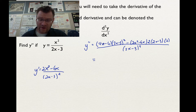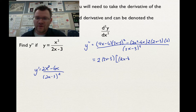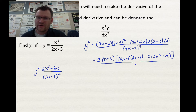Now I can take out a greatest common factor. I've got (2x minus 3) terms, so I'm going to take out one (2x minus 3). I can also take out a 2 from the 4x minus 6, giving me (2x minus 3). I still have one (2x minus 3) left. Over here, after taking out (2x minus 3) and a 2, I'm just left with 2 and 2x squared minus 6x, all over (2x minus 3) to the fourth. I can cancel one (2x minus 3) from numerator and denominator.